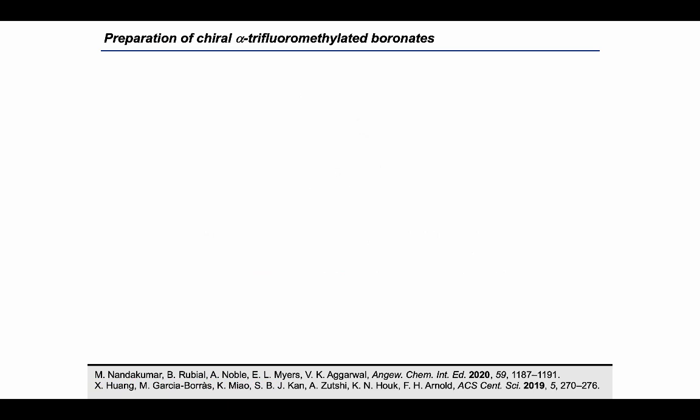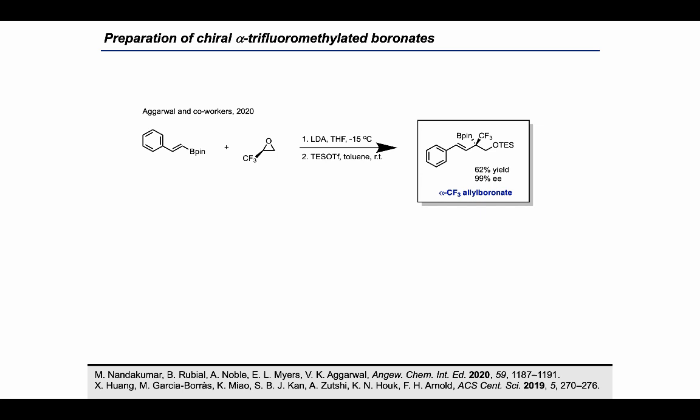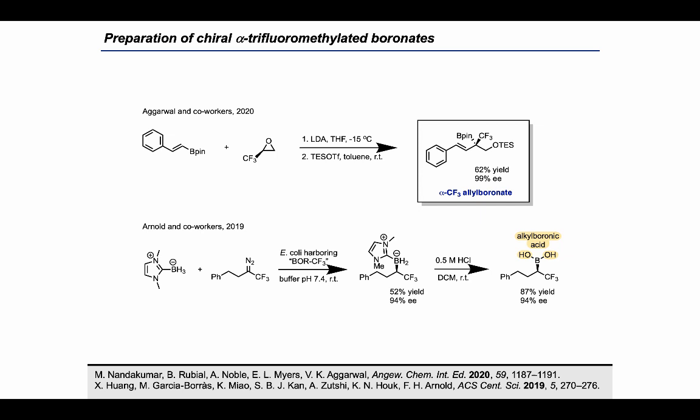Synthetic methods for enantioselective introduction of a CF3 group are of high interest to the discovery and production of pharmaceuticals. The enantioselective synthesis of alpha-CF3 boronates is valuable but has only recently been ventured into. Work by Agarwal and co-workers provides access to a broad variety of chiral alpha-CF3 B-pin compounds by ring opening of a chiral 2-fluoromethyl oxyrene. Arnold and co-workers developed an asymmetric BH insertion of CF3-diazo compounds, catalyzed by an enzyme developed through directed evolution. The boronates obtained can be hydrolyzed to the corresponding boronic acid under mildly acidic conditions.